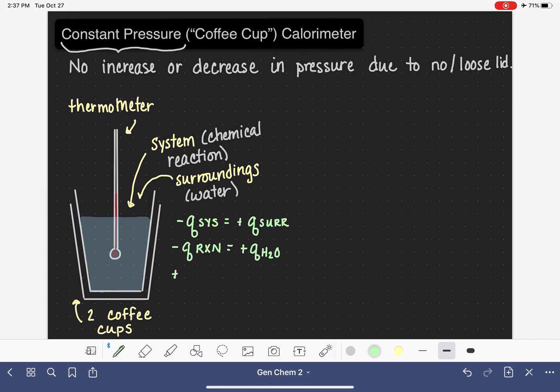If we had an endothermic reaction, which would have a positive Q, all the heat that is being absorbed by the reaction would be coming from the water inside the calorimeter. We can see that the amount of heat, whether we're talking about the reaction or the water, the value of the heat is going to be the same. The only difference will be the sign.